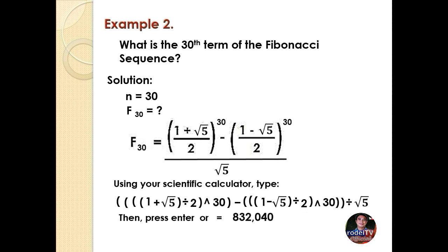We simply round it off to the nearest whole number. Therefore, the 30th term of the Fibonacci sequence is 832,040,000.